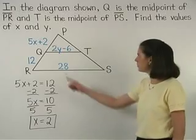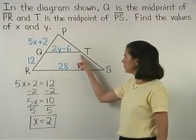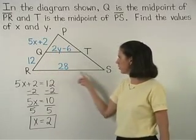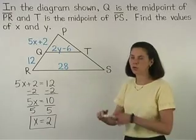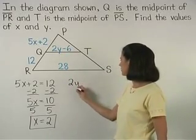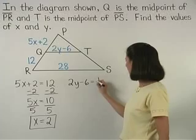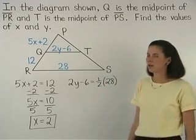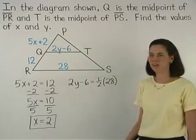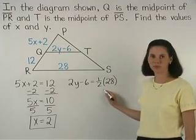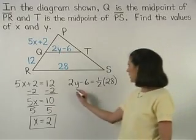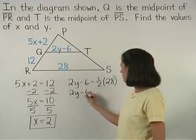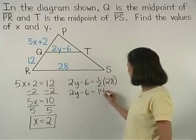So the length of segment QT equals half the length of segment RS. Or 2Y minus 6 equals half of 28. Simplifying on the right side, half of 28 is 14, so we have 2Y minus 6 equals 14.